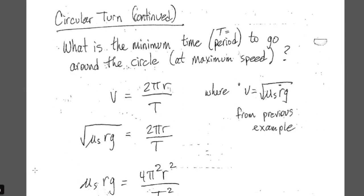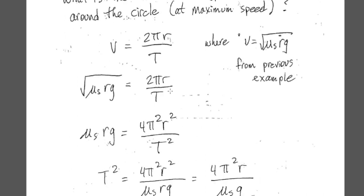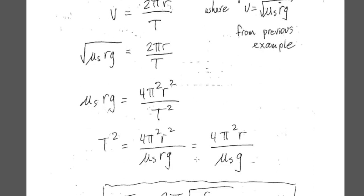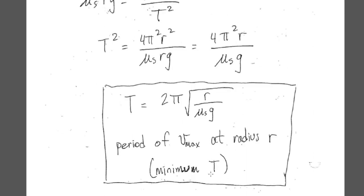What is the minimum time — the period — to go around the circle at that maximum speed? Using velocity equals circumference divided by the period, and substituting the velocity we found, solving for T gives us 2 pi times the square root of R divided by mu times G. That is the minimum time because we're traveling at the maximum velocity.